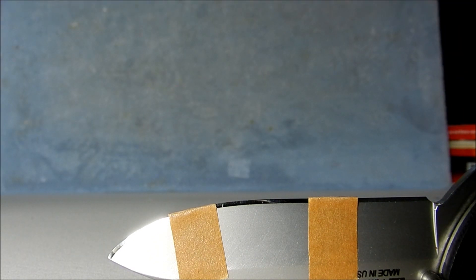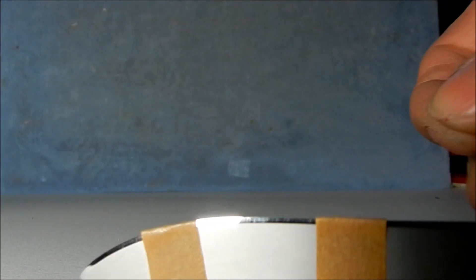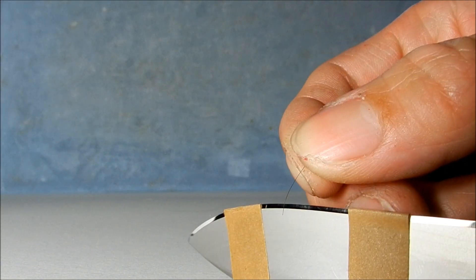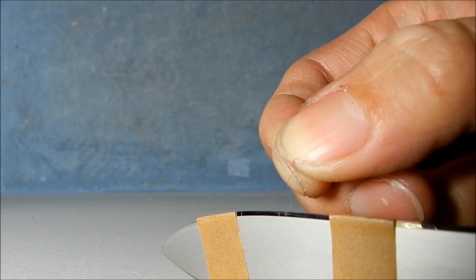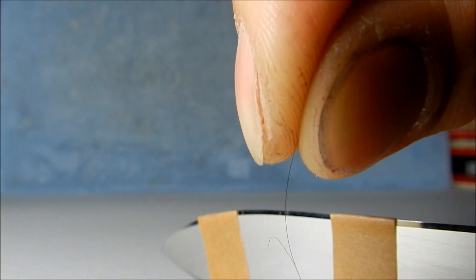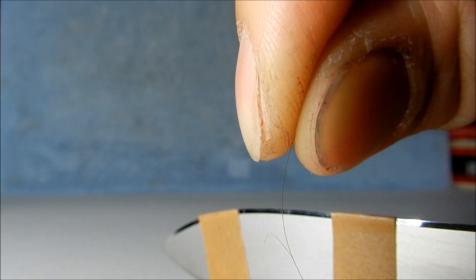I'm going to try to see how many cuts in phone book paper or regular paper it takes to get rid of the hair whittling edge. So to show you that it's hair whittling sharp, let's split that hair.